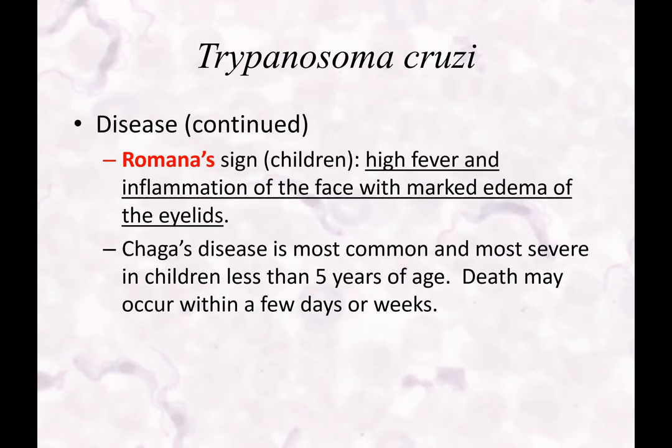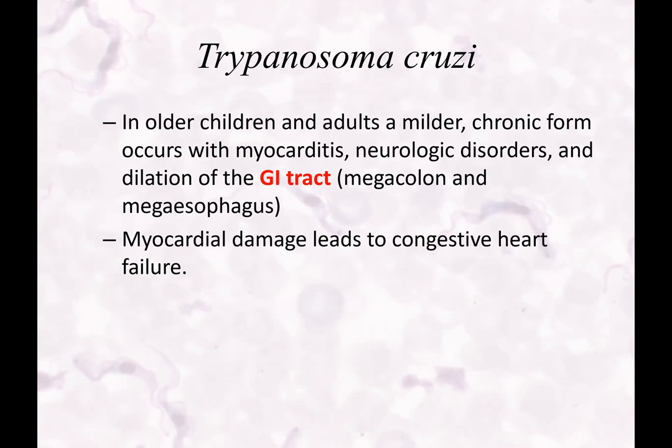A key term to remember is Romana's sign — seen in children infected with trypanosoma cruzi. There's high fever, inflammation, and marked edema in the eyelid area around the eye. Chagas disease is most common and most severe in children less than five, and death can occur within a few days or weeks if not treated. In older children and adults, complications include myocarditis, neurological disorders, and dilation of the GI tract — a megacolon.